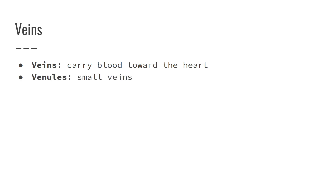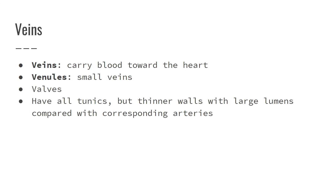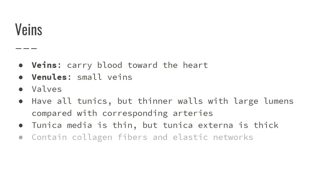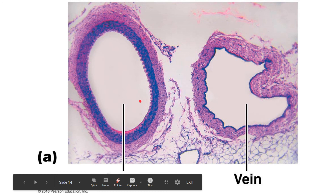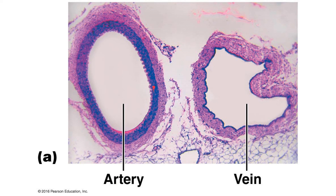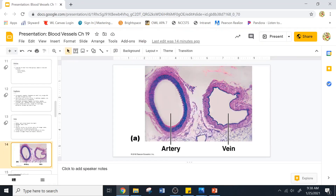Veins carry blood towards the heart. Venules are small veins that interface with capillaries. Veins have valves to prevent backflow and have all three tunics but with larger lumens compared to corresponding arteries. In the microscopic picture comparing an artery and a vein, we can see the tunica intima as a thin pink layer and the dark purple tunica media on the artery. The vein has a smaller media, and because it lacks the muscle giving it structure, it kind of collapses and looks floppy. Please let me know what questions you have.